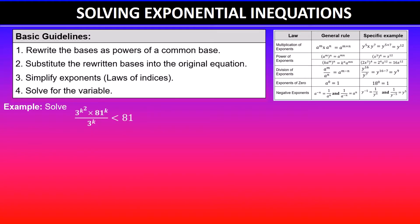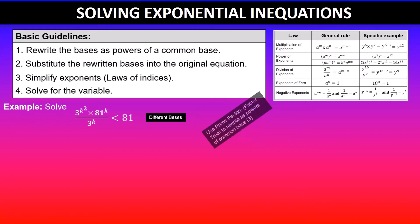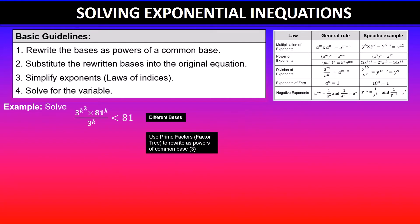Solve: 3 to the power of k squared, times 81 to the power of k, divided by 3 to the power of k, is less than 81. You can clearly see that we have different bases, so step one is to rewrite the bases as powers of a common base. In this case we'll use factor 3, so the common base will be 3.